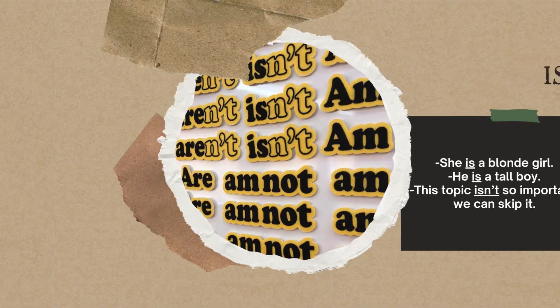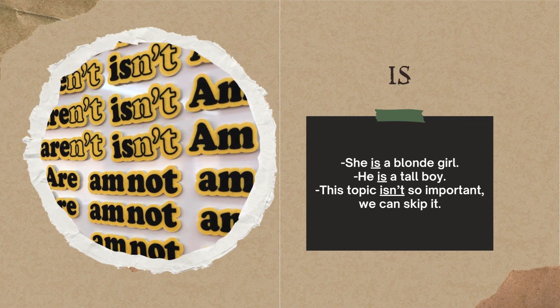Is is used with he, she, or it — third person singular or objects. If we look at examples: she is a blonde girl; he is a tall boy.